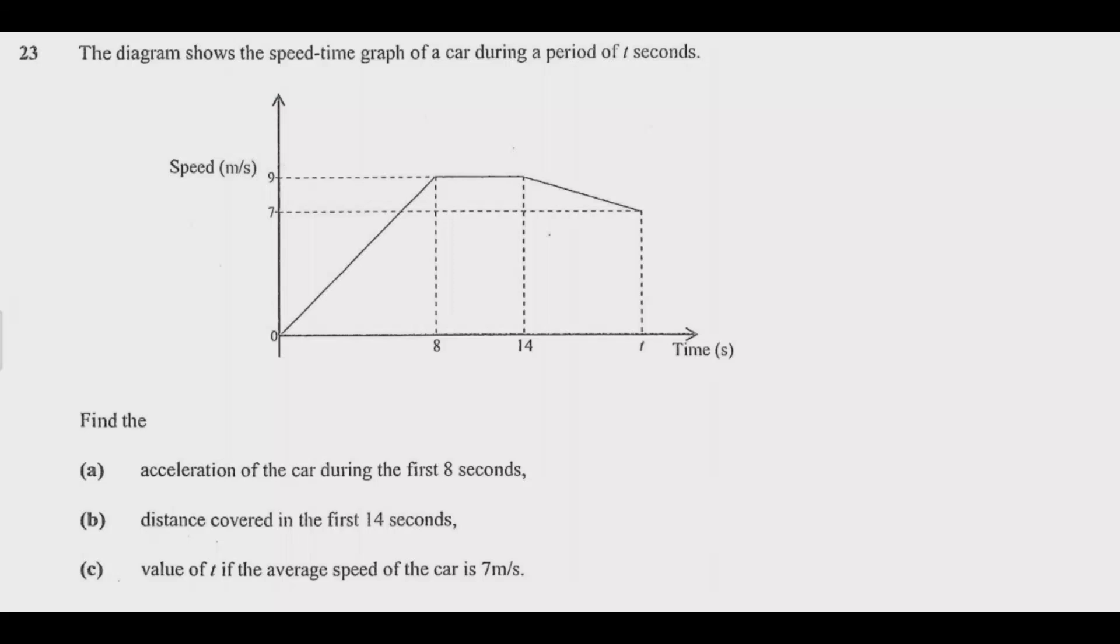Let us look at question A23. The diagram shows the speed-time graph of a car during a period of t seconds. So we have the graph. The question asks to find: (a) acceleration of the car during the first 8 seconds, (b) distance covered in the first 14 seconds, (c) value of t if the average speed of the car is 7 meters per second.